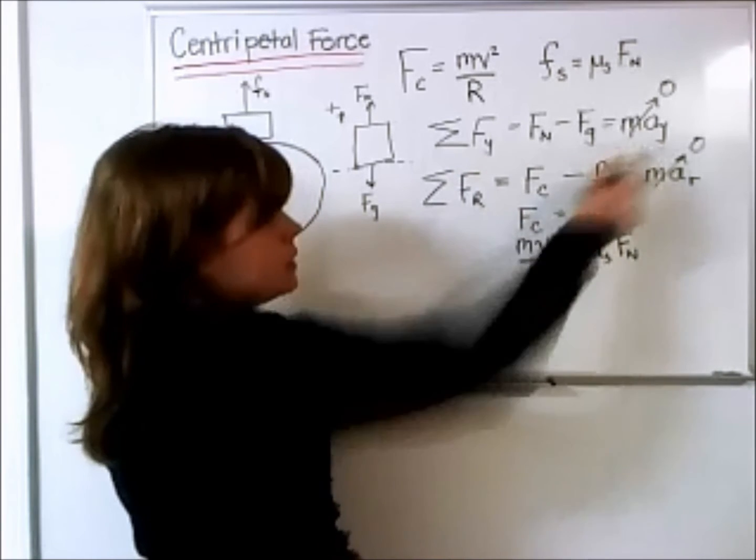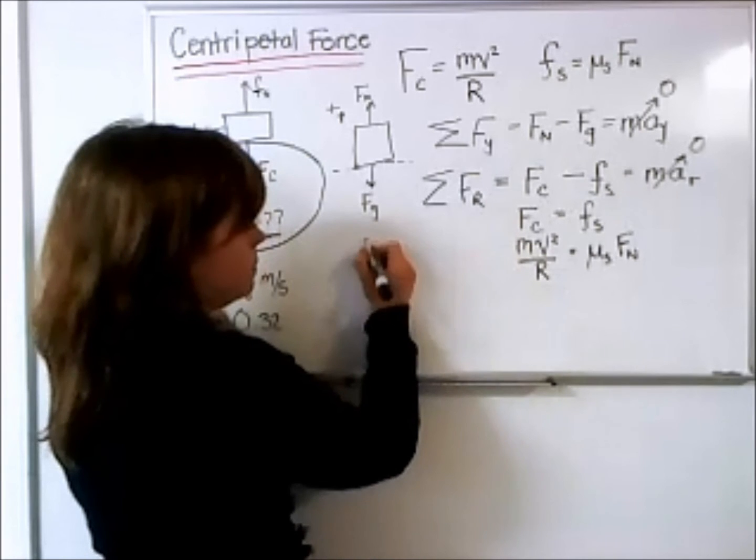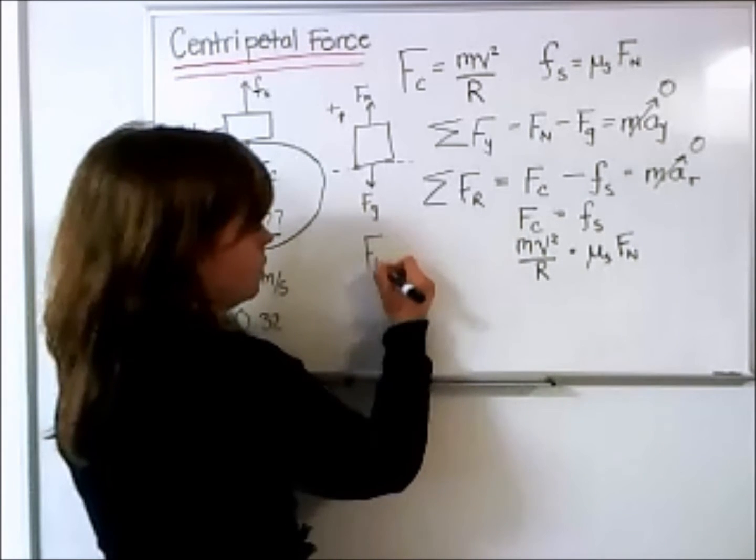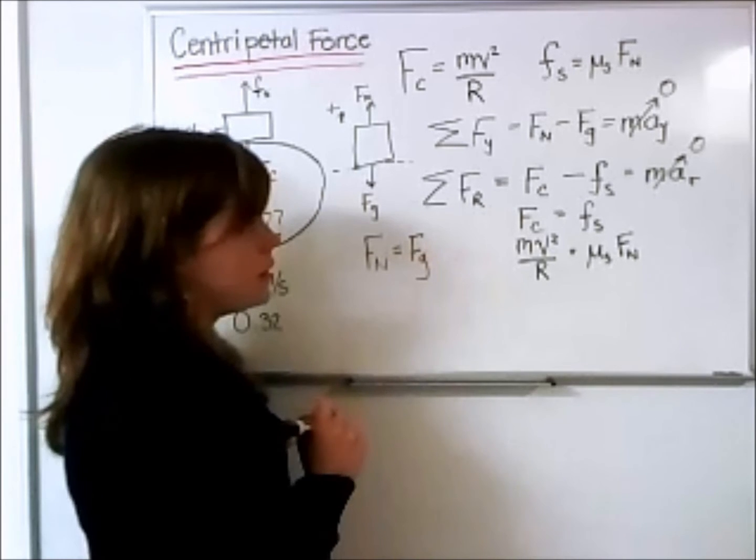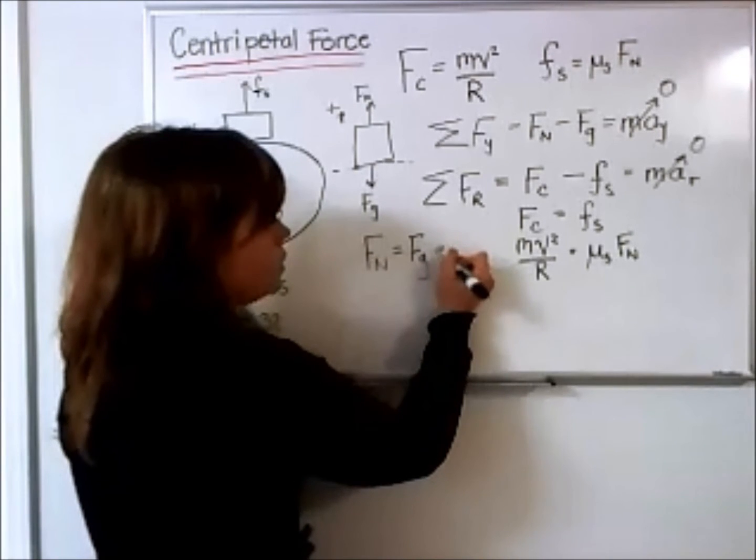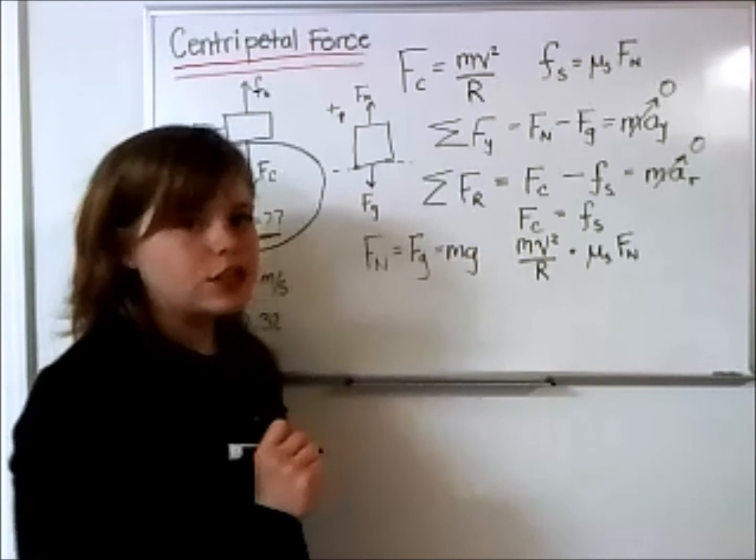So going back up to this net force, I'm going to solve for this normal force. So I get Fn is equal to Fg, force due to gravity. And the force due to gravity, if you recall, is equal to the mass times the acceleration due to gravity, G.